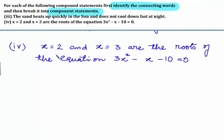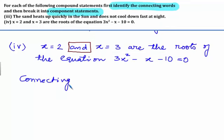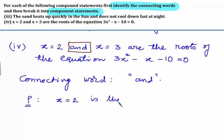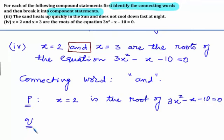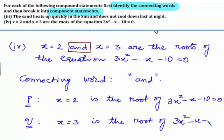The fourth statement is: x is equal to 2 and x is equal to 3 are the roots of the equation 3x² − x − 10 = 0. Here the connecting word is AND. The component statements are: the first one is x = 2 is the root of 3x² − x − 10 = 0, and the next statement is x = 3 is the root of 3x² − x − 10 = 0.